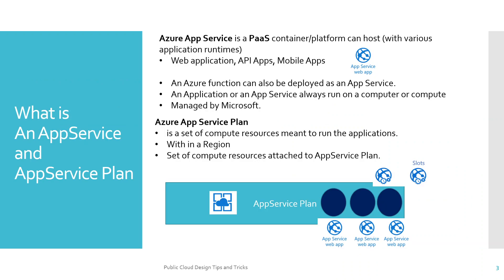Before we go to App Service Plan, let's discuss a bit about what an App Service is. Azure App Service is a PaaS container or platform that can host different applications like web applications, API apps, and mobile apps with various application runtimes. An Azure Function can also be deployed as an App Service. Applications in an App Service always run on a compute resource managed by Microsoft.